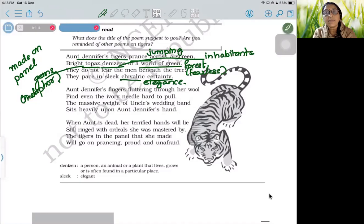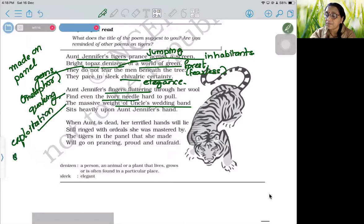In the second paragraph, Aunt Jennifer's fingers are fluttering through her wool. Fingers fluttering through her wool means they are shaking, trembling. They find even the ivory needle hard to pull. Here, ivory needle means something very slight, very light. She cannot even lift a very light thing. Why? Because the massive weight of uncle's wedding band sits heavily upon Aunt Jennifer's hand. The exploitation that she has undergone because of marriage with uncle has made her weak. She has become weak because of the marital discord.